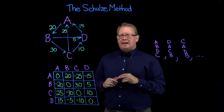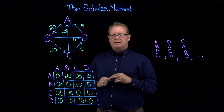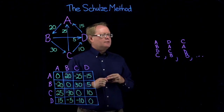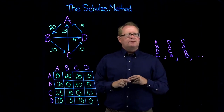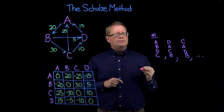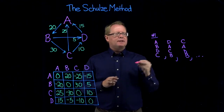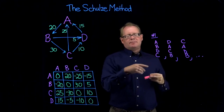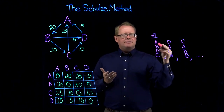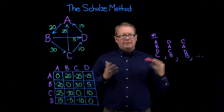The Schulze method is a method for determining the winner of a preferential ballot election. A preferential ballot election uses preferential ballots. For example, voter number one might have the preferences in order of A, B, D, or C, where A, B, D, and C represent the candidates — Anderson, Brown, Davis, and Chang — who are running for governor.